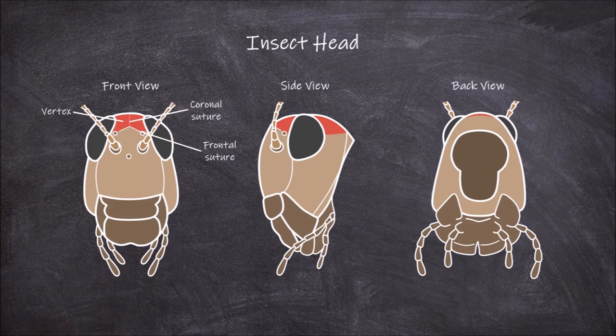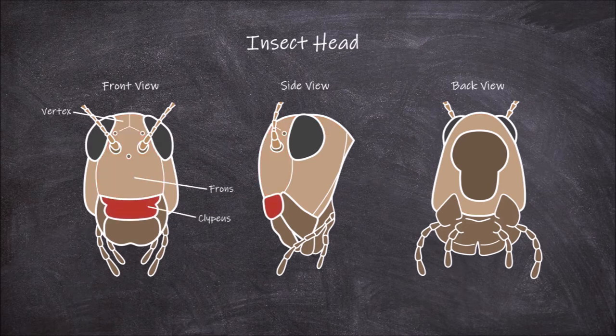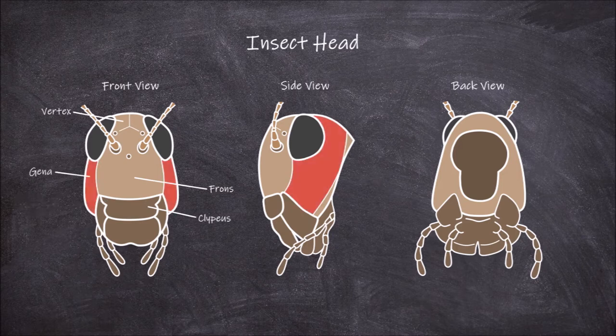In between these two frontal sutures is the sclerite known as the frons. Below the frons is the clypeus. Between the frons and the clypeus is a suture known as the epistomal suture, also known as the fronto-clypeal suture. On the outer sides of the head are the lateral sclerites known as the gena.